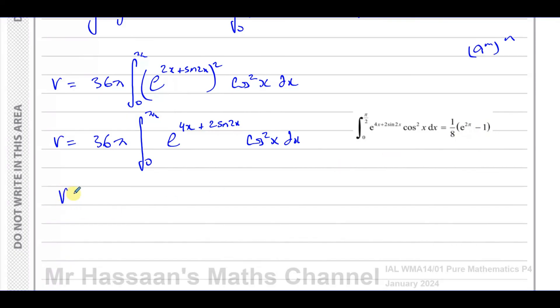V is going to be 36π times 1 over 8 e to the power of 2π minus 1. We can see that 4 goes into this 9 times, 4 goes into this 2 times, so we're left with 9π over 2 times e to the power of 2π minus 1, and this is cubic units.